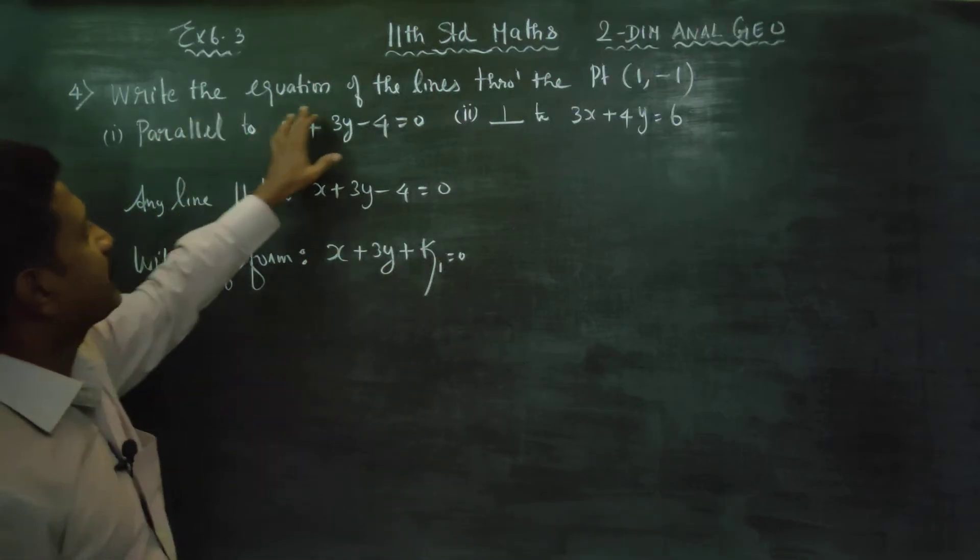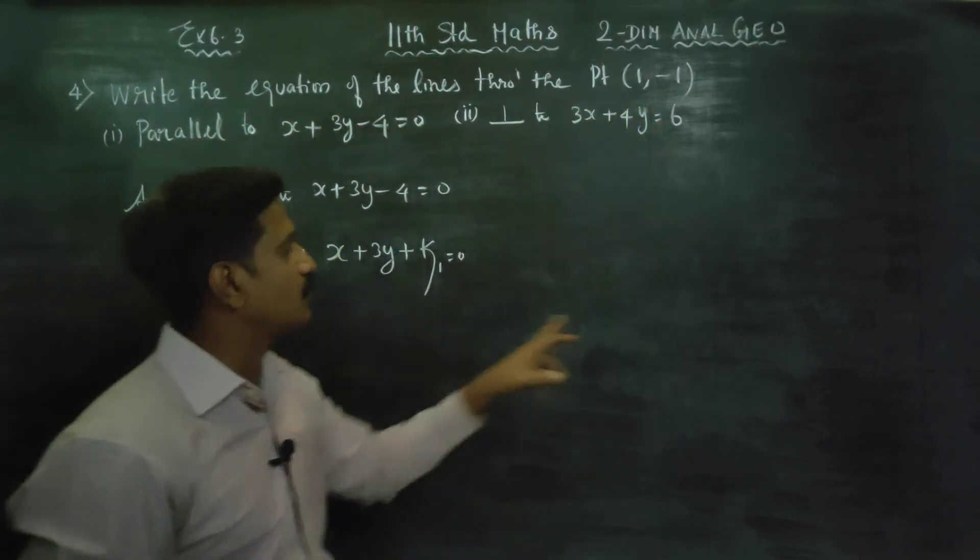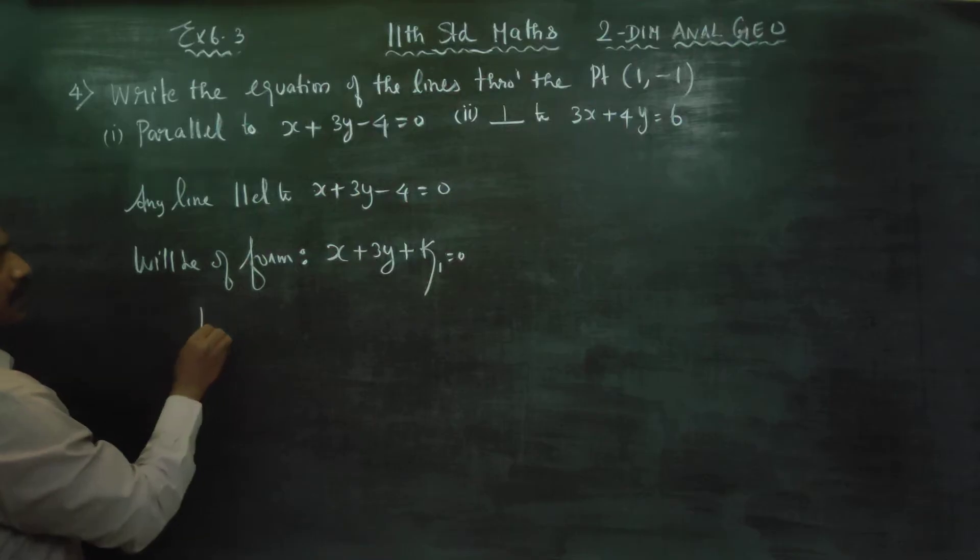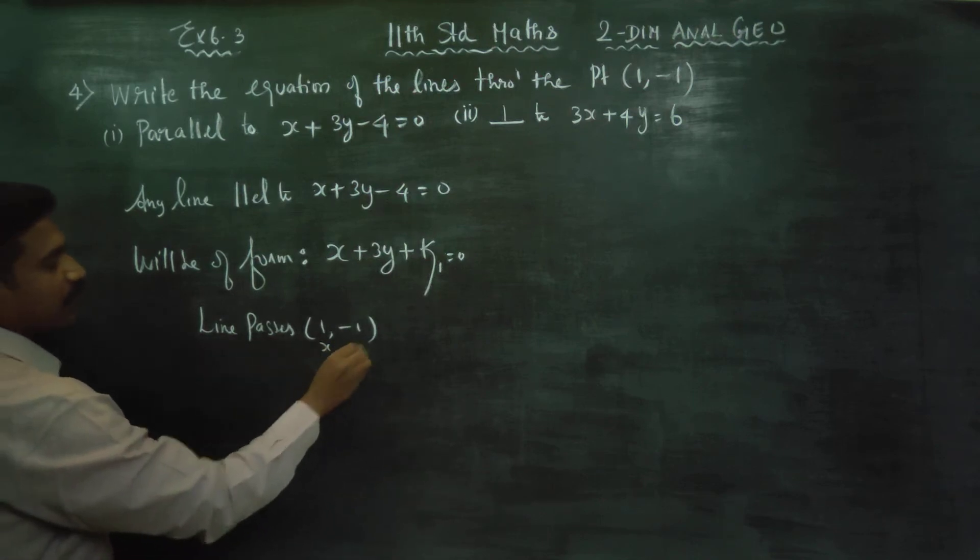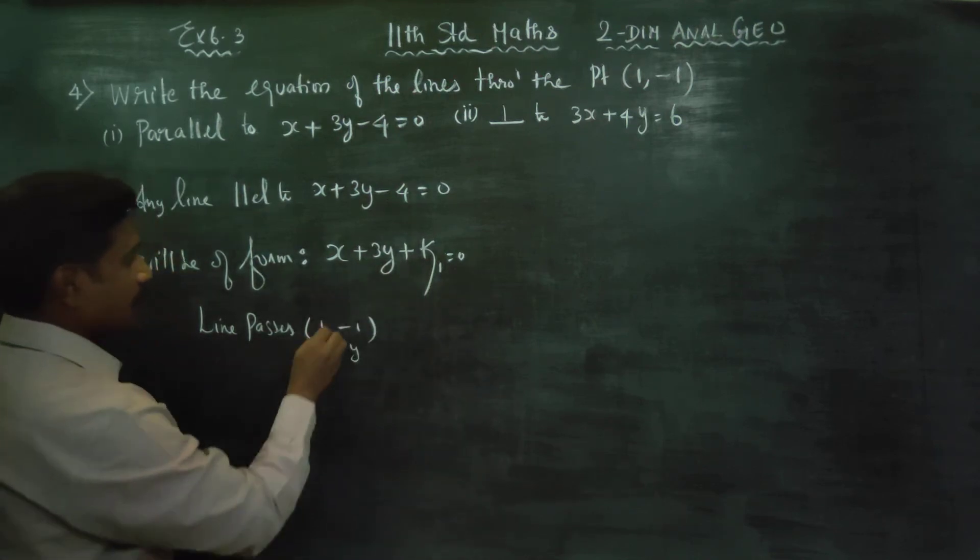The line passes through (1, -1). So, x and y substitute into k equals 0. So, 1 plus 3 times minus 1 plus k1 equals 0.